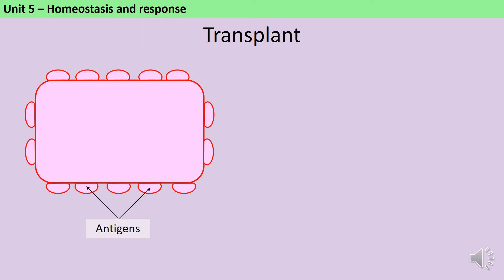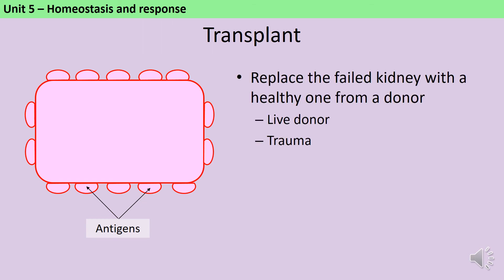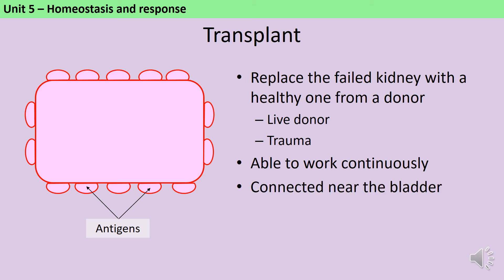Dialysis needs doing multiple times a week — it's very time consuming and not particularly pleasant, and some people even lose considerable body mass every time it's done. One alternative is a kidney transplant, where the failed kidney is replaced by a healthy one from a donor. This could come from a live donation from someone who has chosen to give up one of their two kidneys, or from someone who agreed to be an organ donor and has since died, for example in a car accident. The advantage of a transplant is that once the kidney is inside you it works around the clock, so you no longer need to visit hospital multiple times a week. During a kidney transplant, the surgeon connects the new kidney near to the bladder, and the old kidneys are left in their original place.